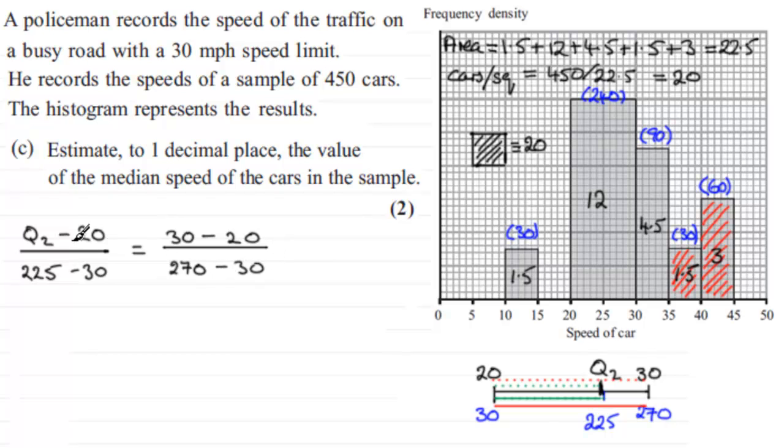And all we've got to do now is just rearrange this to make Q2 the subject. Well, we've got Q2 minus 20, okay, 225 minus 30 is 195. So I'm going to times both sides by 195. So we've got to times this fraction here by 195. Well, 30 take 20 is 10, and 270 take 30 is 240. And I'm multiplying that by the result of 225 minus 30, which is 195. Work this out, and add 20 to both sides, and you end up with Q2 equaling 28.125.